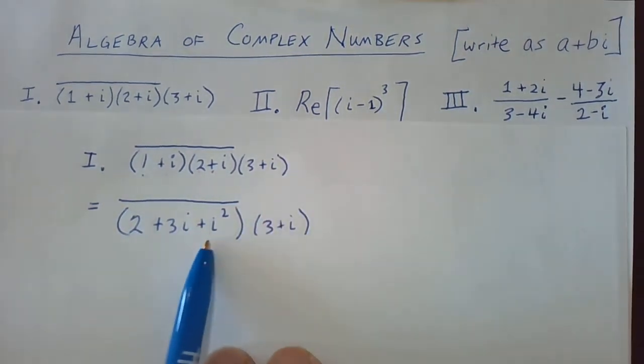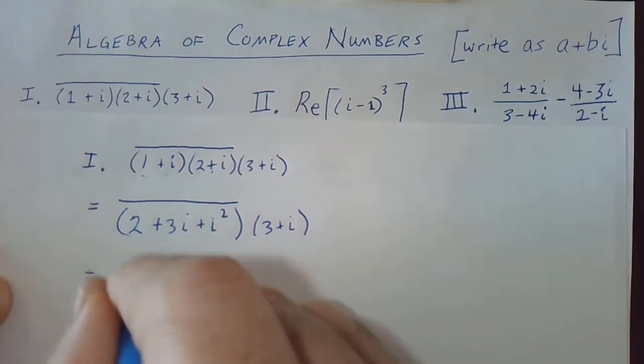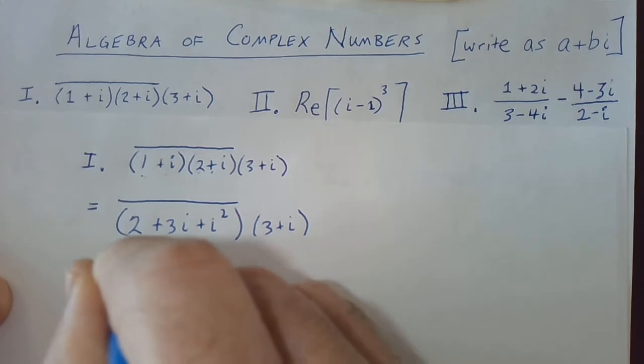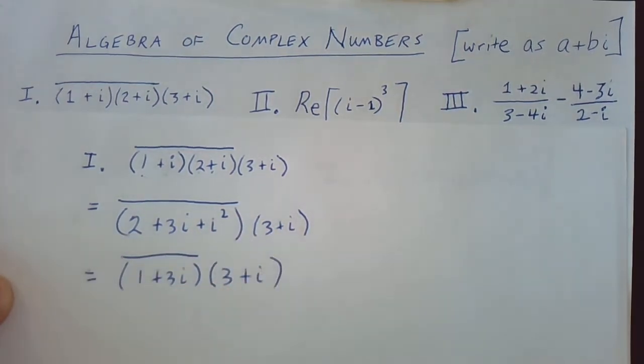Now recall i squared is negative 1. So if we combine this negative 1 and the 2, we get 1 plus 3i complex conjugate times 3 plus i.